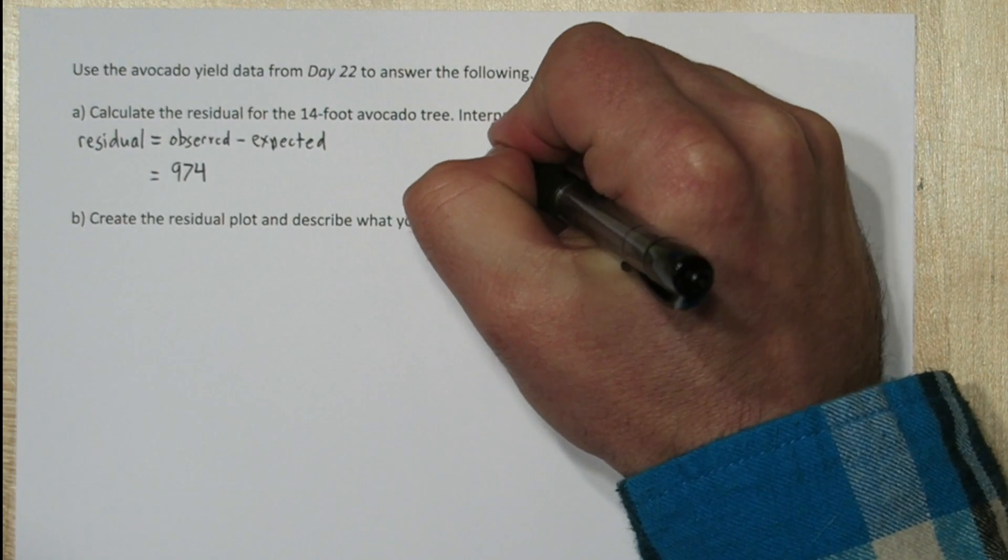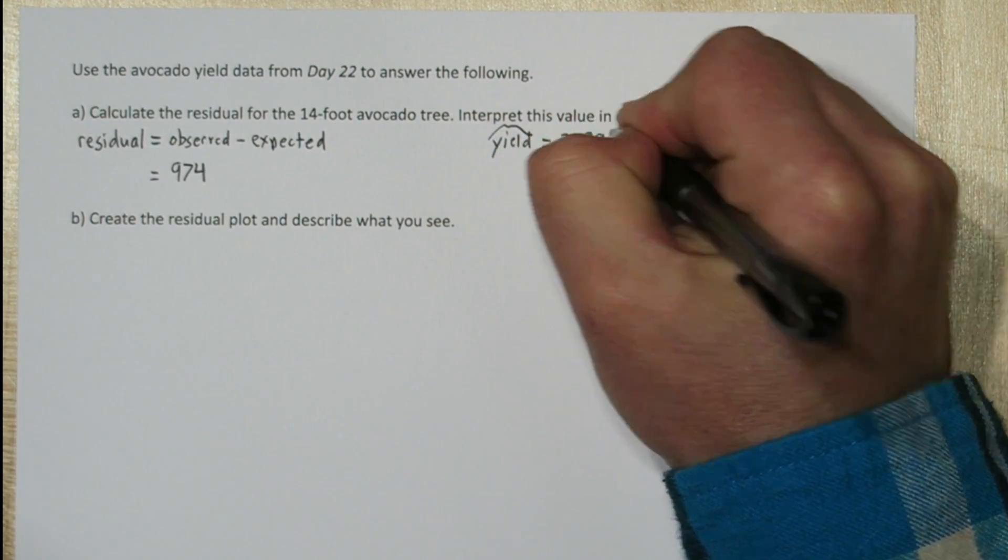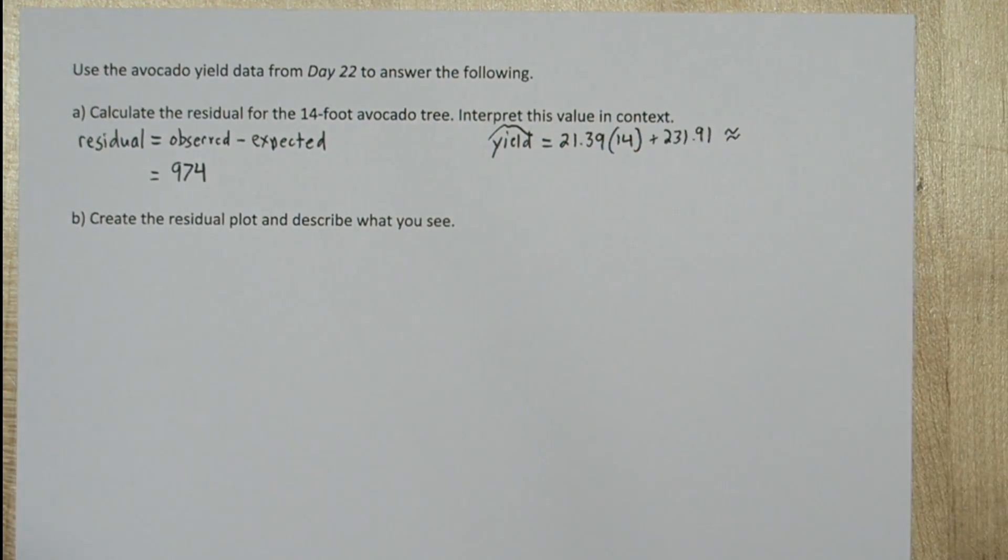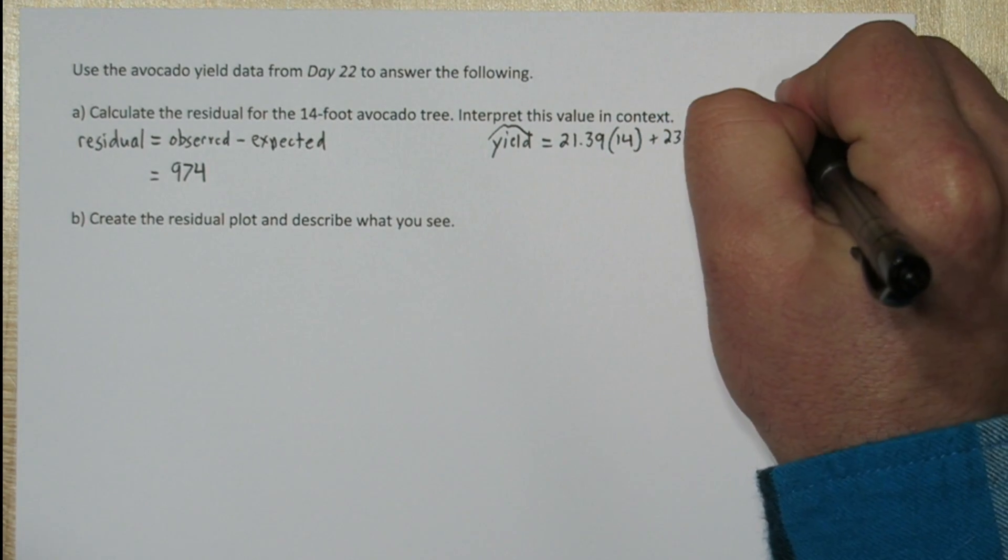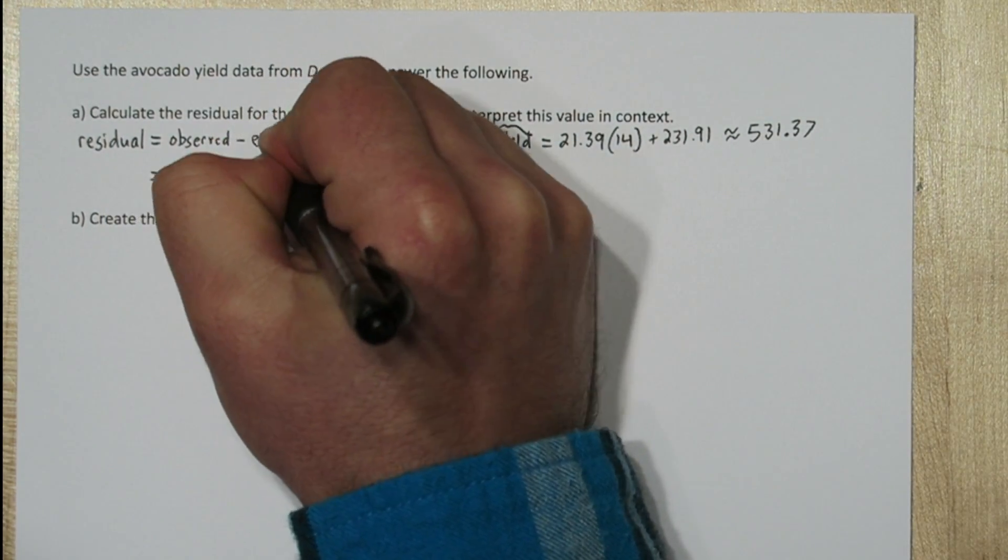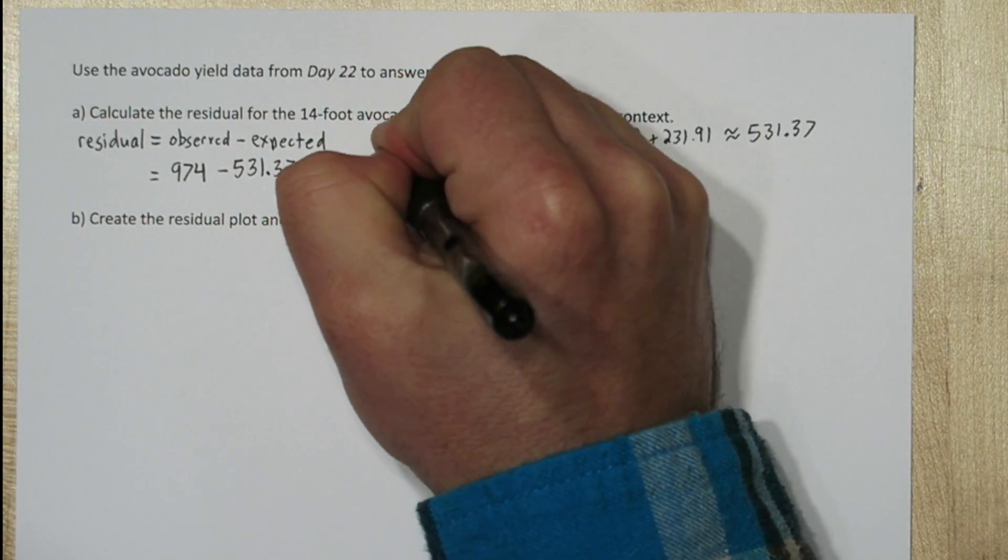Now using our equation from that problem, we can calculate what we'd expect the yield for a 14-foot tree to be. So our predicted yield is 21.39 times 14 feet plus 231.91. So our predicted yield is 531.4 approximately. So our residual is 442.63 pounds.